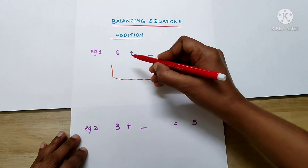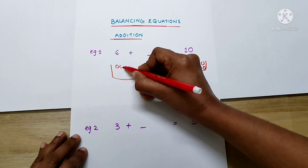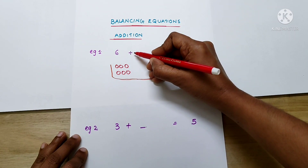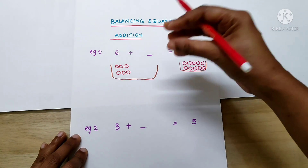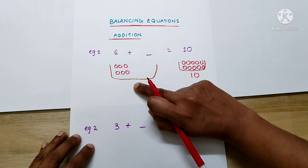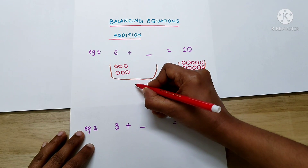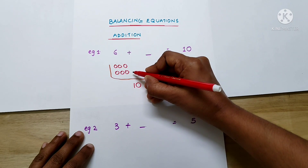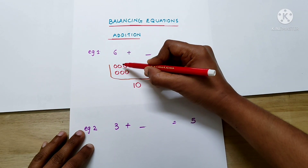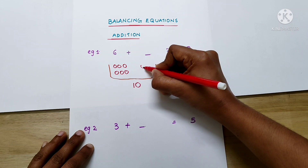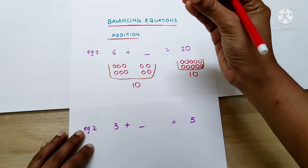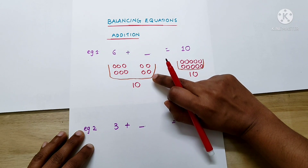Now consider this basket — we have 6 here, so there are 6 apples. This is an addition sign, which means we have to add some more apples into the basket and make it 10. There are 10 apples on the right side, so this basket should also contain 10 apples. But we have only 6 apples here, so we have to make it 10. We added some more apples into the basket and made the number of apples 10.